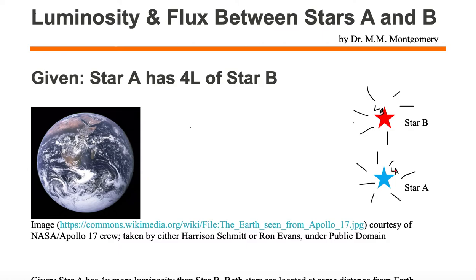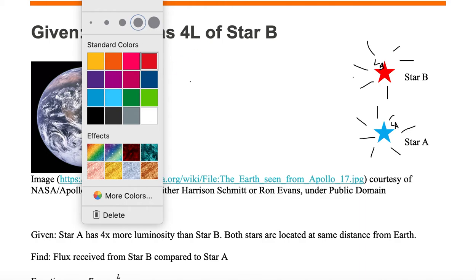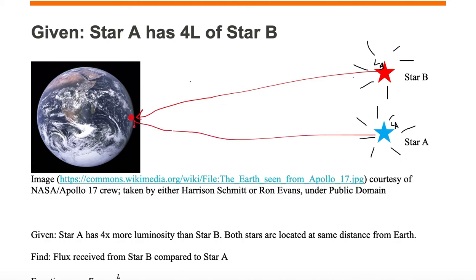We're talking about luminosity, which is at the surface of the star. Our goal here is to find the amount of flux received from star B compared to star A, and both stars are located at the same distance from Earth. So we want to know, on one square meter, how much of the starlight is going to reach the surface of that one square meter on Earth from star A compared to star B.